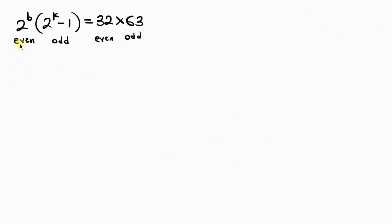Comparing, we have the even on the left which is 2^b equal to the even on the right, 32. And the odd on the left is 2^k - 1 equal to 63, which is the odd on the right. So we have two cases here.